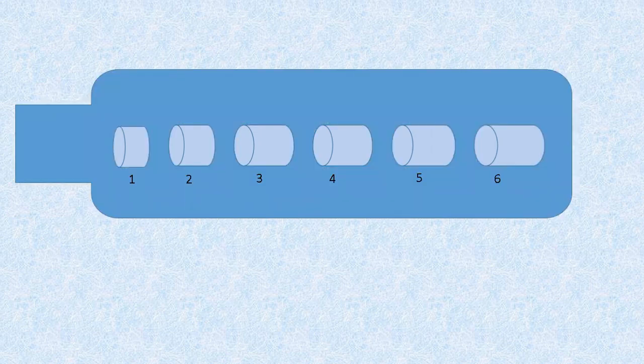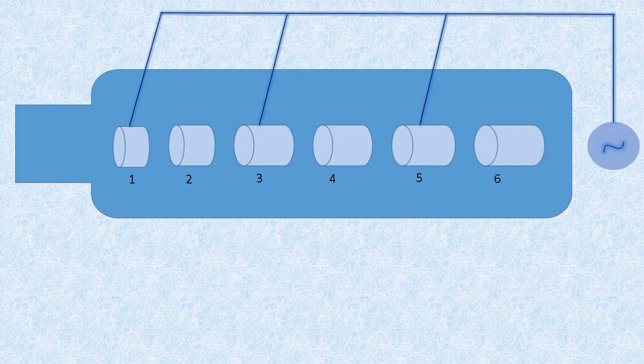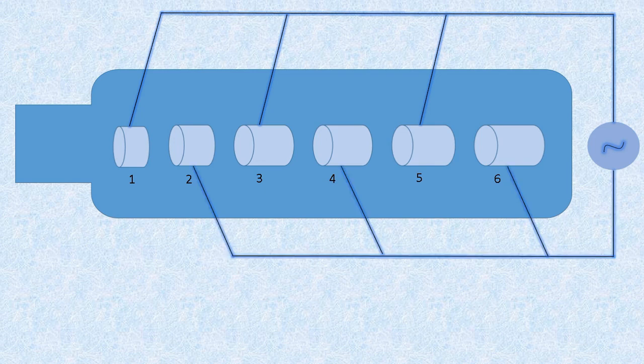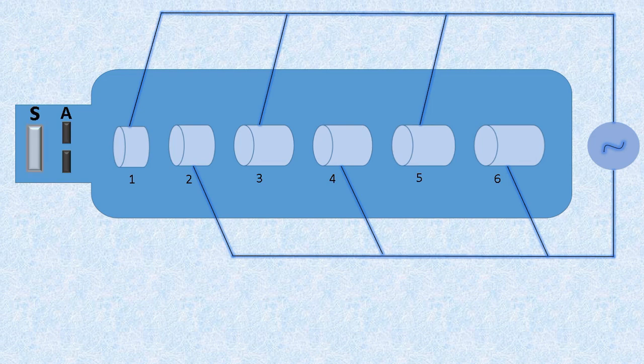All alternate cylinders 1, 3 and 5 are connected to one terminal of radio frequency supply and the remaining 2, 4 and 6 are connected to the other terminal of power supply. A is an anode and S is the source of positively charged particle.